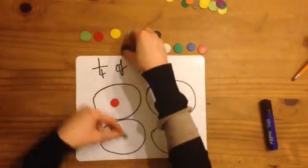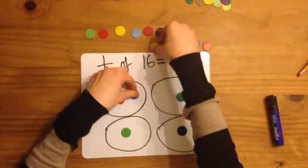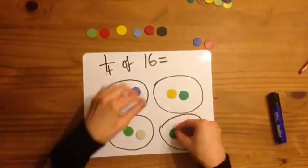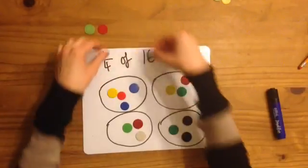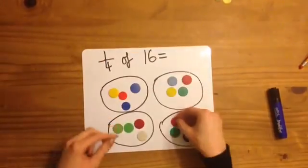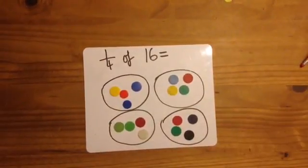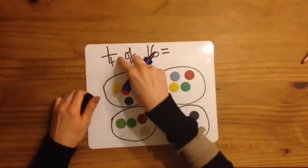So 1, 2, 3, 4, 5, 6, 7, 8, 9, 10, 11, 12, 13, 14, 15, 16. I can see they're shared out equally and one quarter, one hoop has got 4 counters in it.